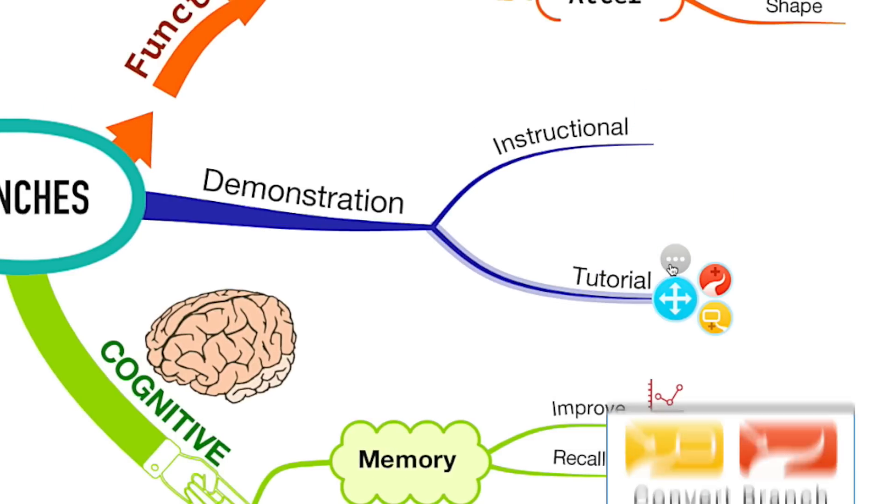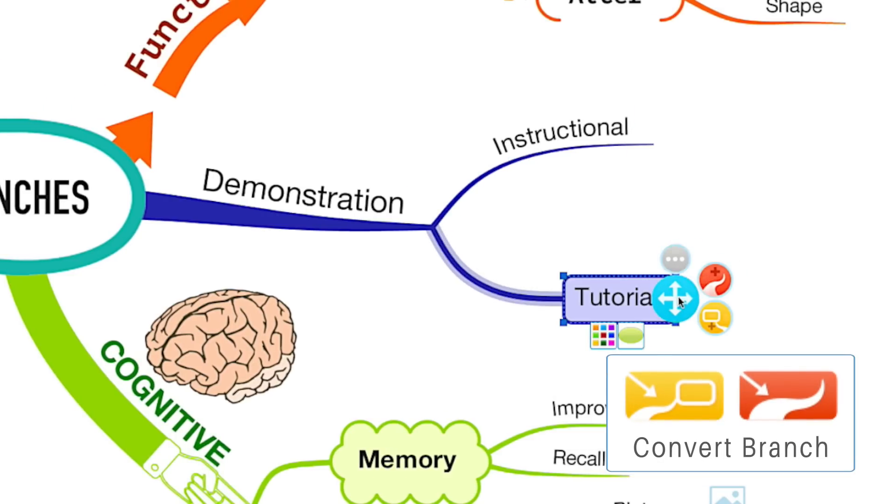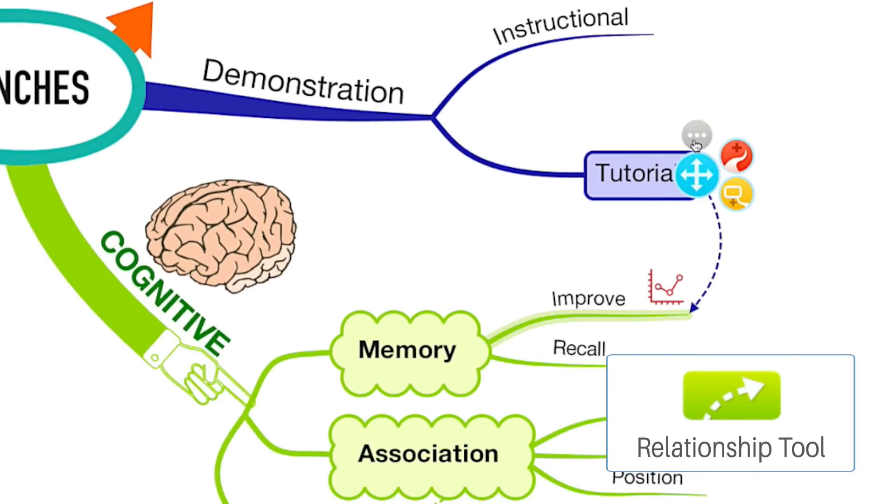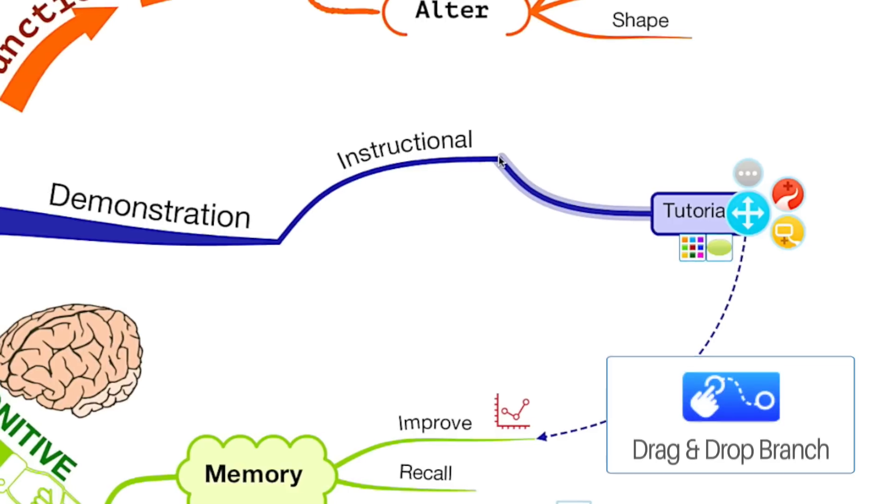From here you can convert the branch type, create relationships between branches, drag and drop a branch to a new tree.